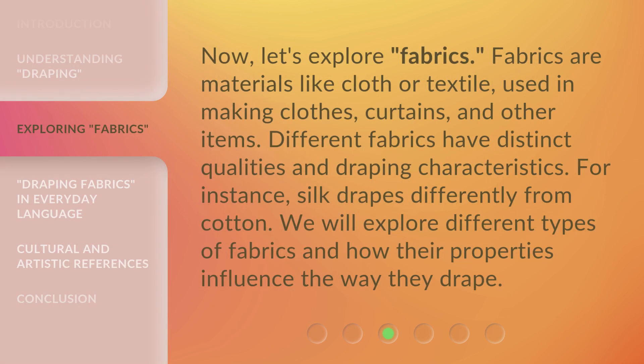Now let's explore fabrics. Fabrics are materials like cloth or textile used in making clothes, curtains, and other items. Different fabrics have distinct qualities and draping characteristics. For instance, silk drapes differently from cotton. We will explore different types of fabrics and how their properties influence the way they drape.